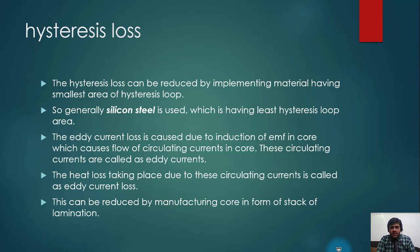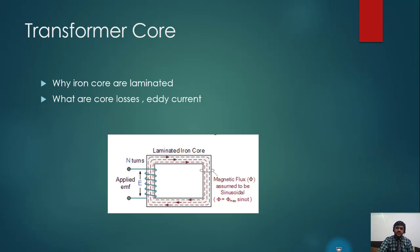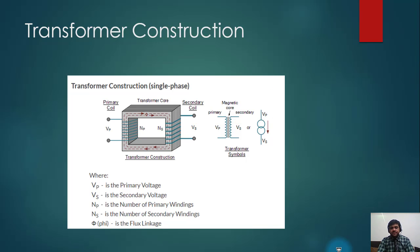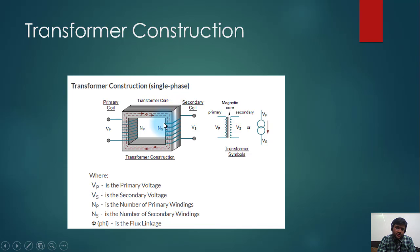Another core loss is eddy current loss. Just like a conductor cuts flux and has EMF induced by mutual induction, the same flux that cuts the secondary coil is also cutting the core. The core also has resistance, so a current is also induced in the core. This current will circulate through a path in the core.